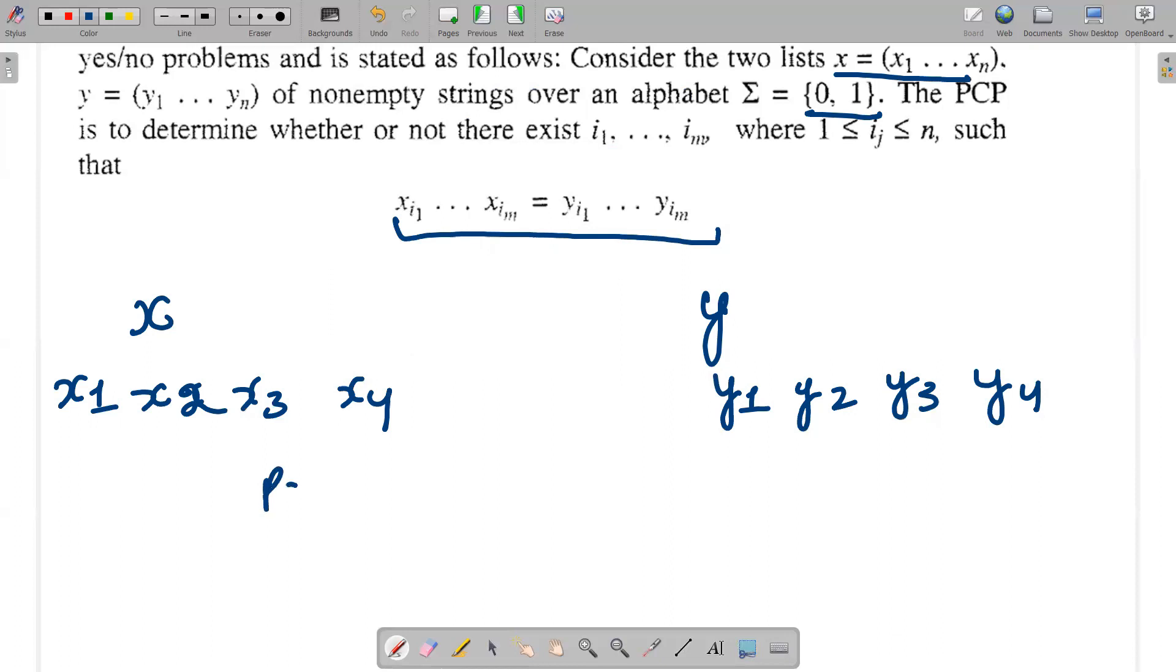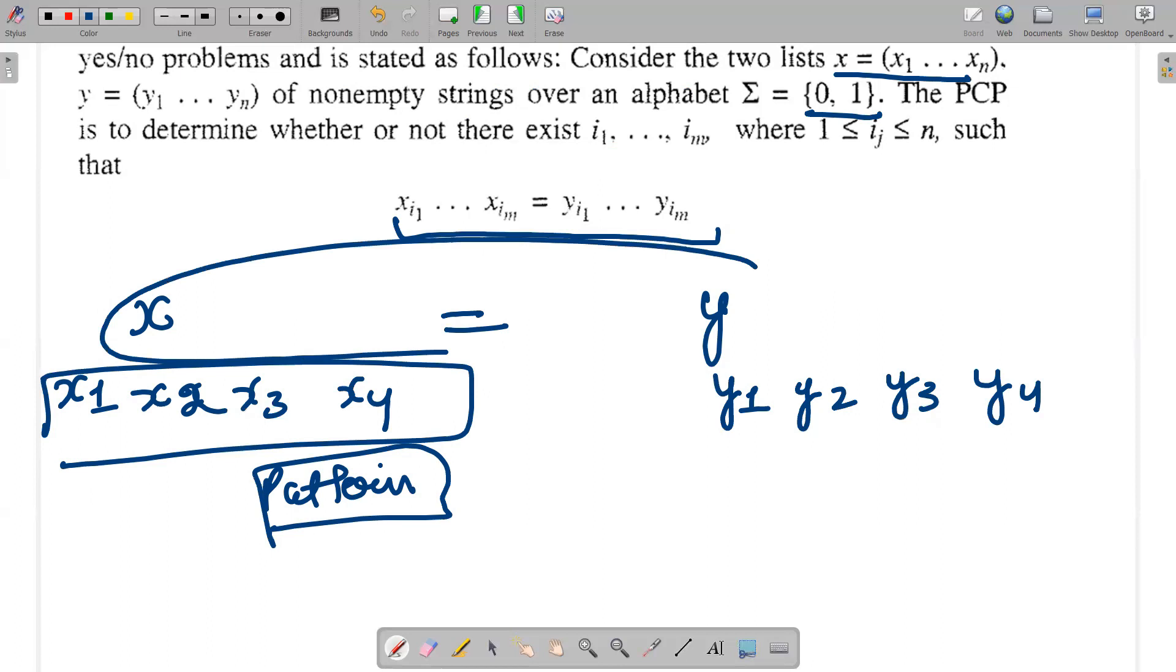If I put that particular pattern so that x is equal to y, I have to find that pattern. For example, if I can put 1, 2, 3, it means x1, x2, x3. If I combine them together, they should equal y1, y2, and y3.